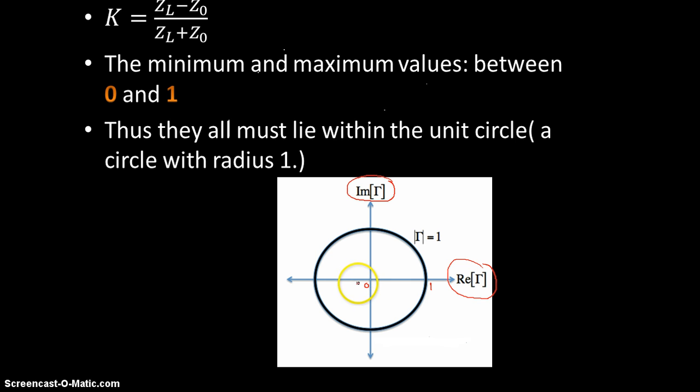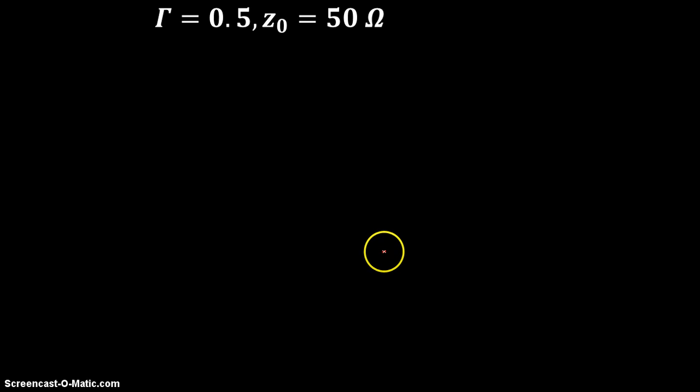We are going to take a few examples and see how the values of reflection coefficient K can be plotted on the plane. For all of the examples I am going to assume that the characteristic impedance value is 50 ohms.